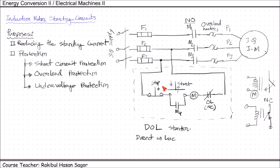Now let me show the stop condition. When you press the stop button, the two sides will be disconnected. Once disconnected, for a small period of time the M coil will be de-energized. If the M coil is de-energized, then M1, M2, M3, and M4 will all be opened. Even though you release the stop button, since M4 is open, the M coil cannot be energized again. So once the motor is stopped, it will remain stopped.